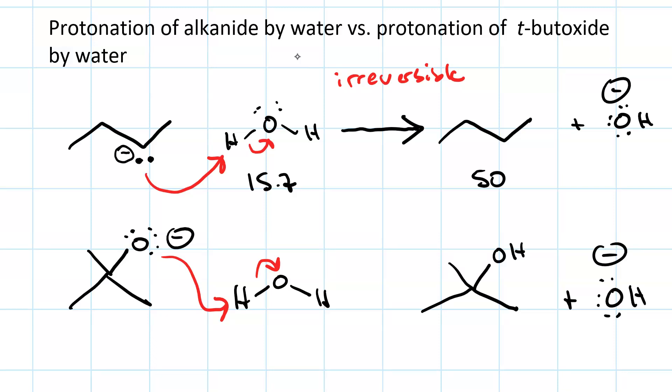And our products are T-butanol and hydroxide. Looking at the pKa values, water is again 15.7, and T-butanol is 18. That's a difference of less than 6. So this is reversible.